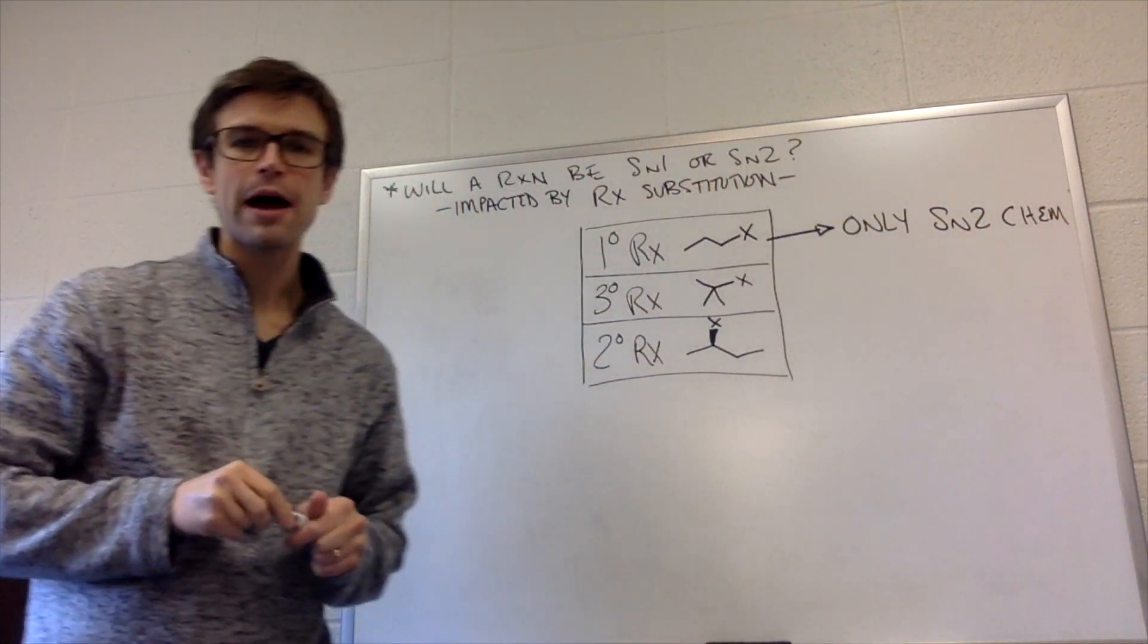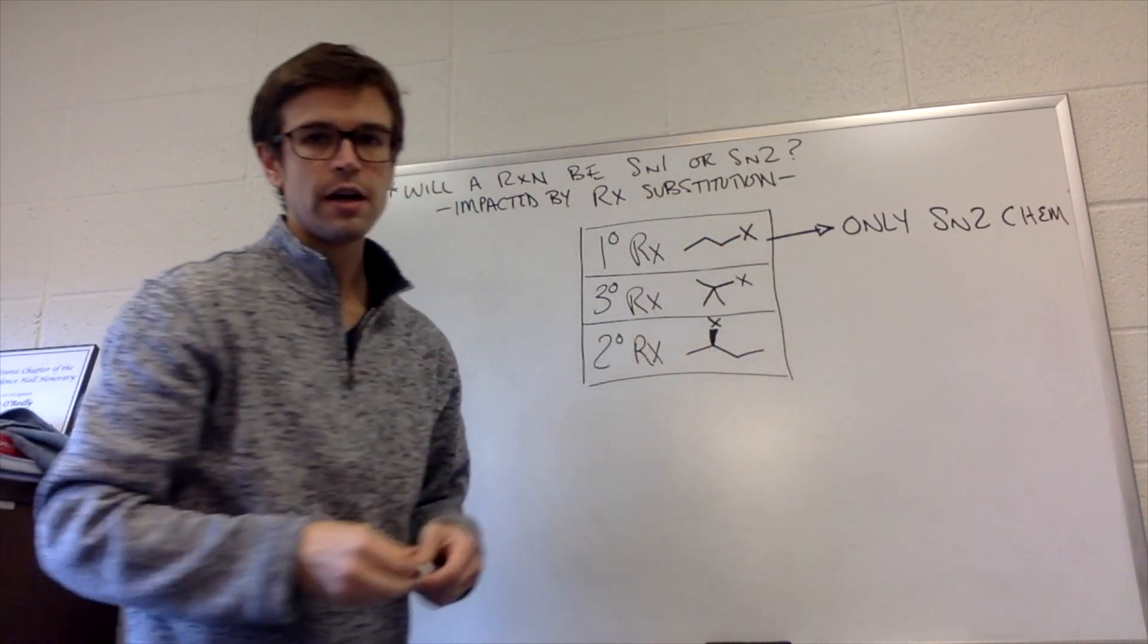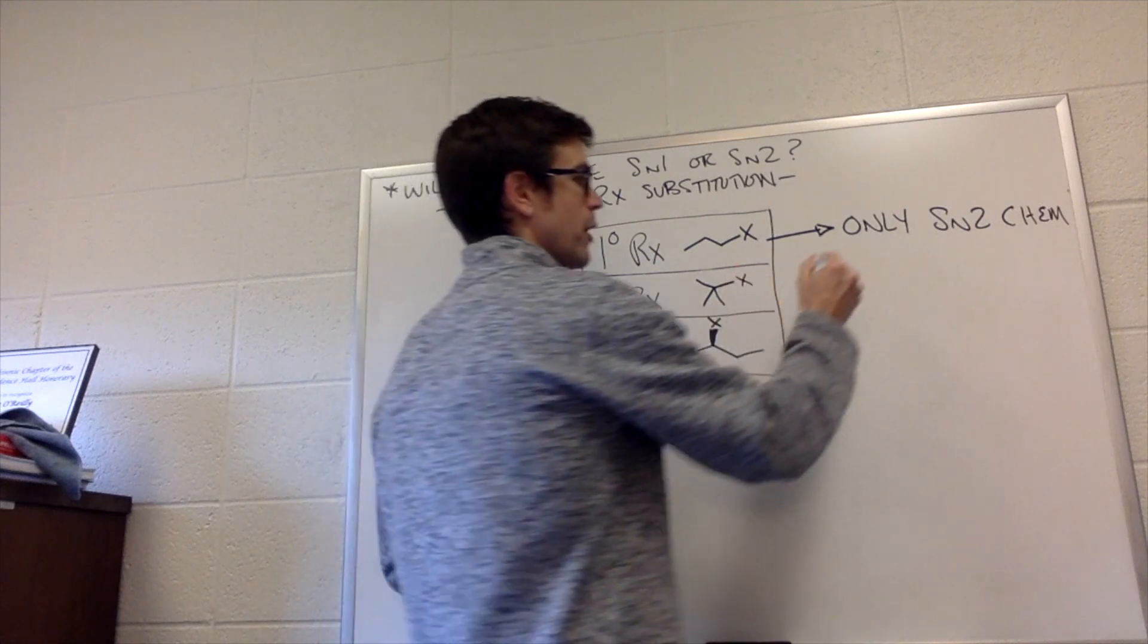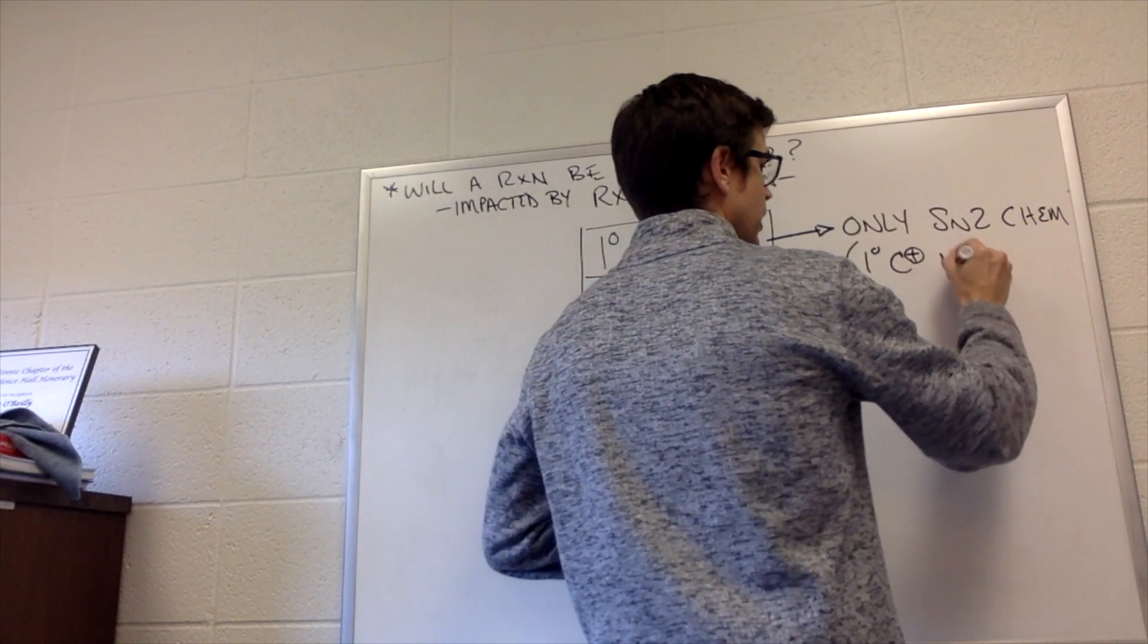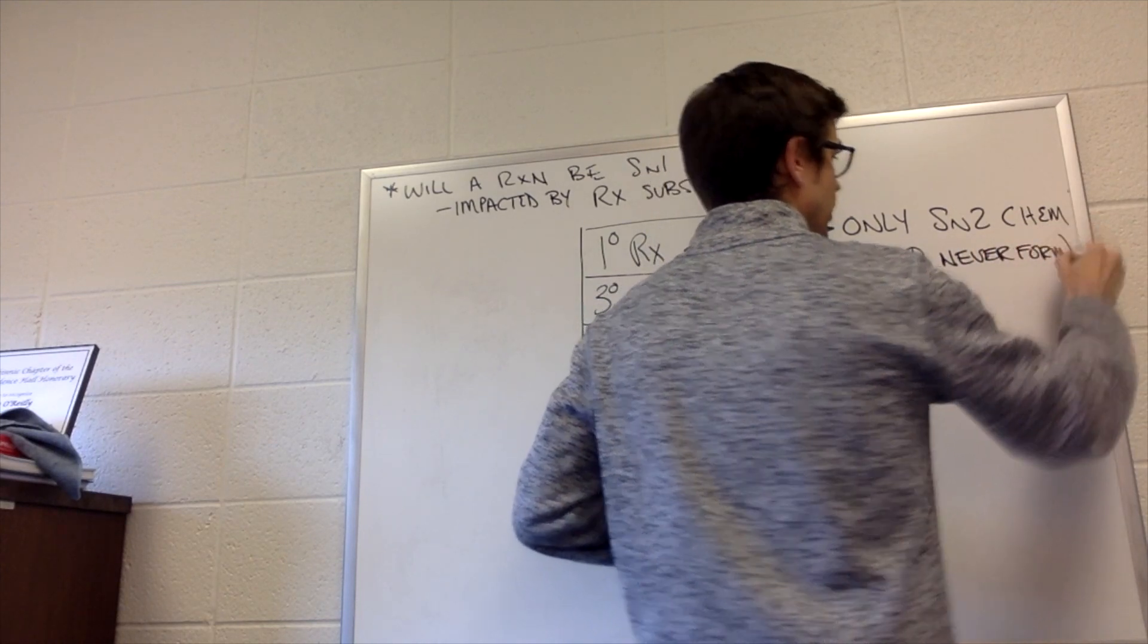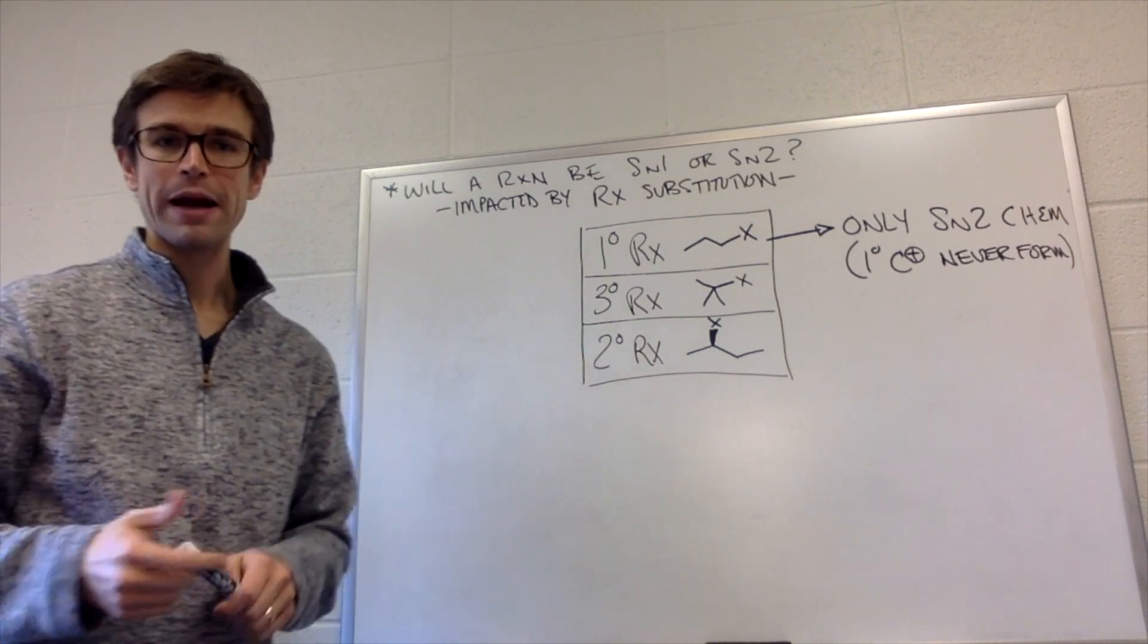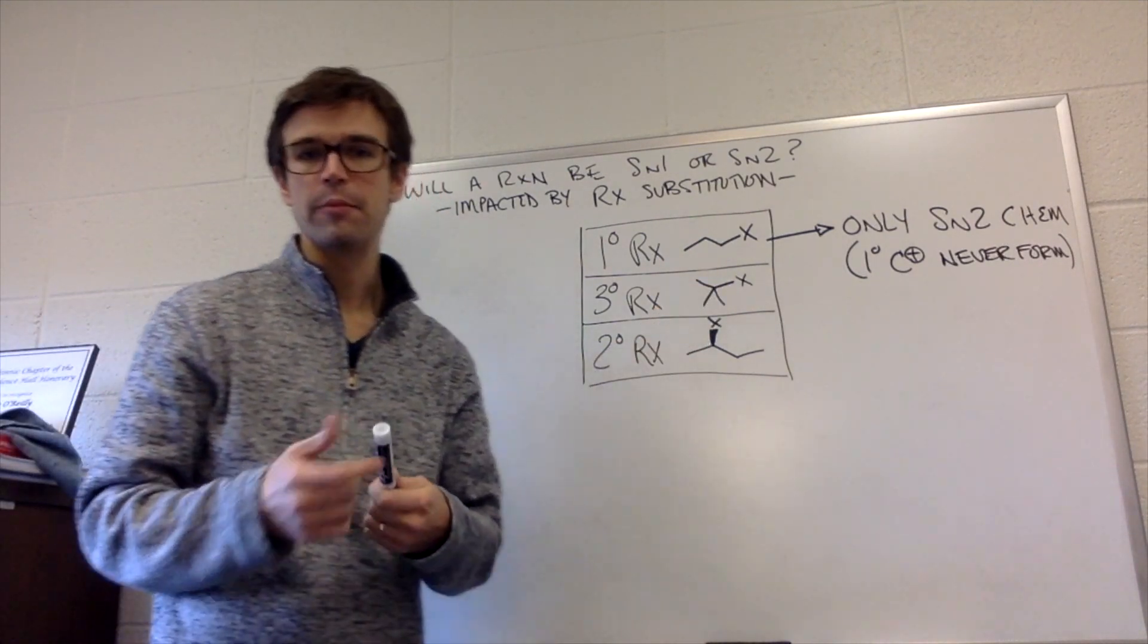Also, if we think about the stability of carbocations, if this halogen just left, it would have a very unstable primary carbocation. I'm going to tell you right now, we can write this under here too. Primary carbocations never form. They are too unstable. So anytime we have a primary alkyl halide, it can't be a unimolecular mechanism because that would require us to have the carbocation on a primary position.